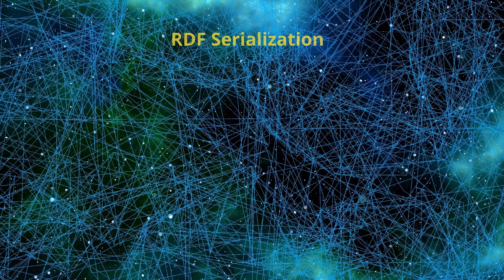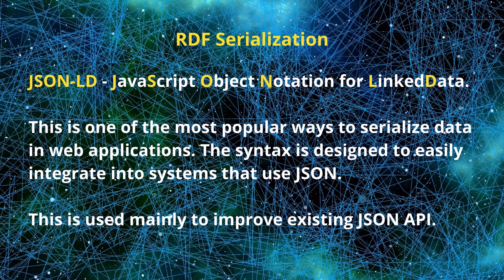JSON-LD stands for JavaScript Object Notation for Linked Data. It is one of the most popular ways to serialize data in a web application. JSON-LD is a JSON-based RDF format for representing linked data. The syntax is designed to easily integrate into systems that already use JSON, providing a smooth upgrade path from JSON to JSON-LD. This serialization is recommended by the W3C, or World Wide Web Consortium, and is used mainly to improve existing JSON APIs.